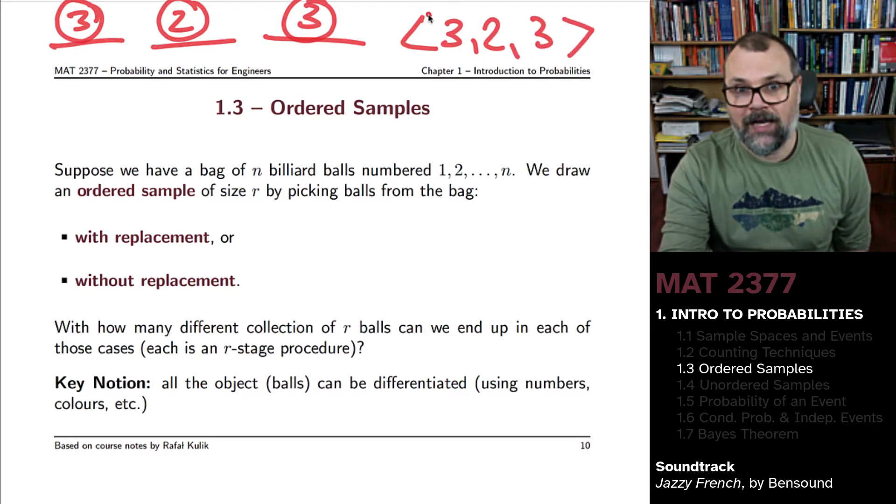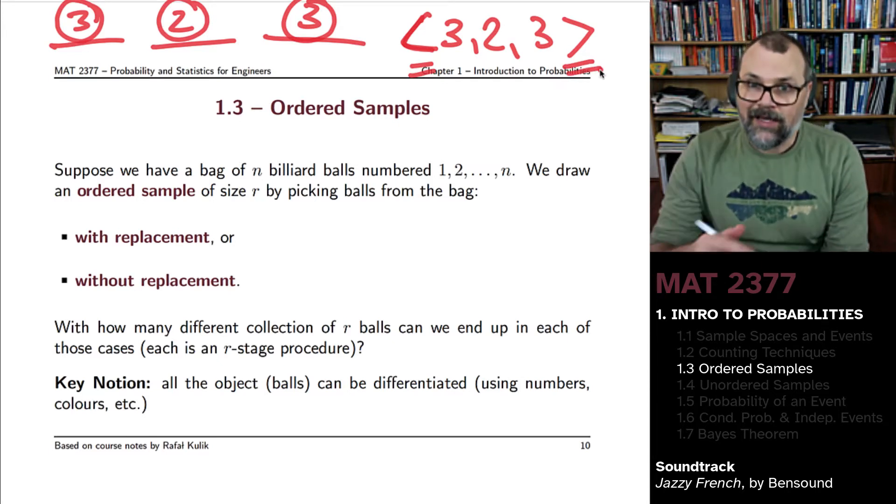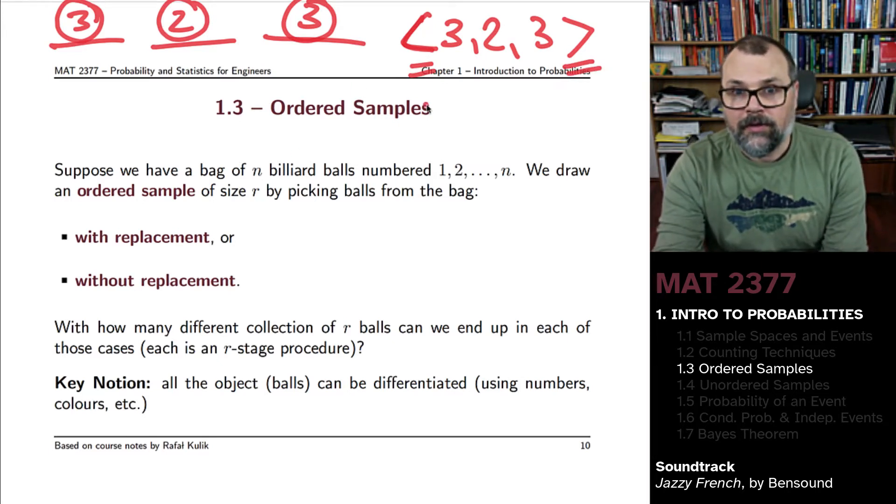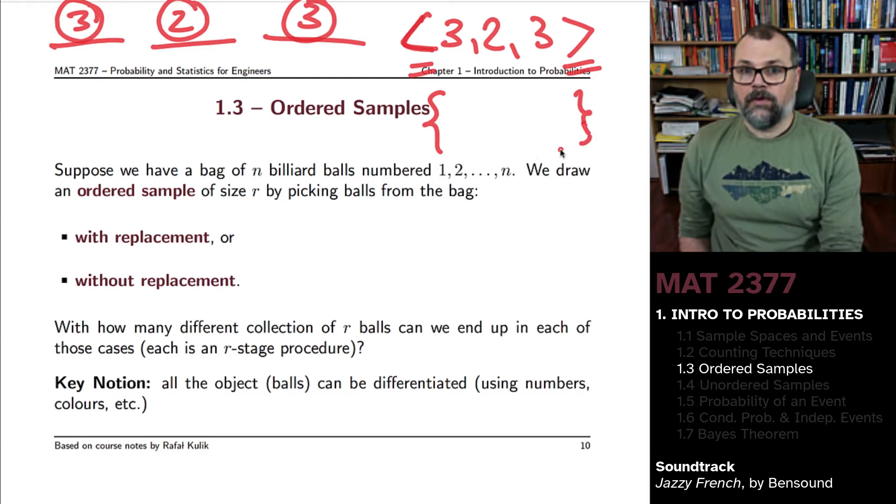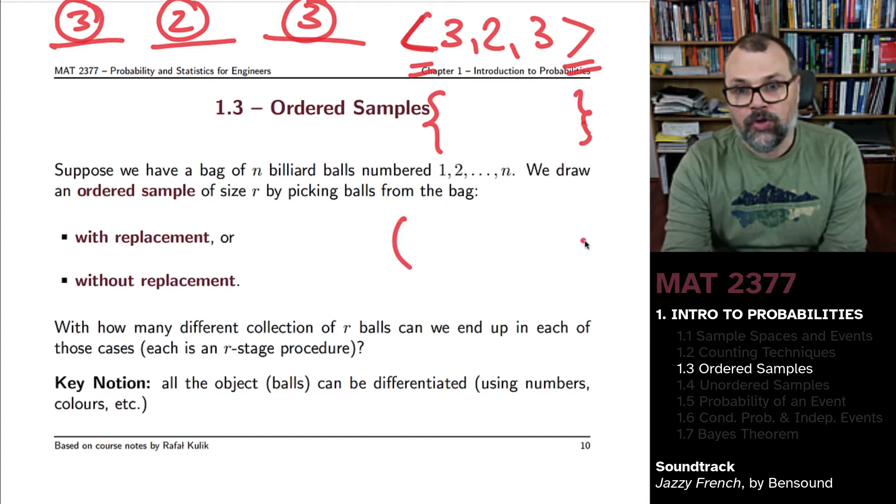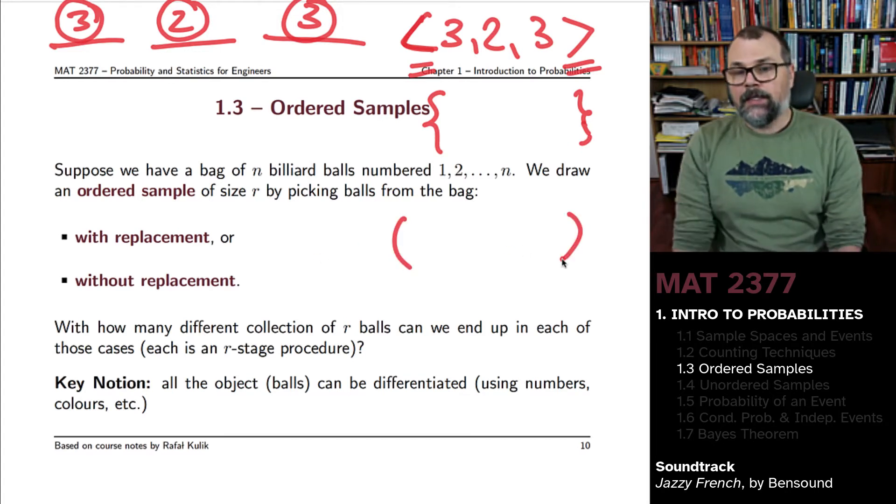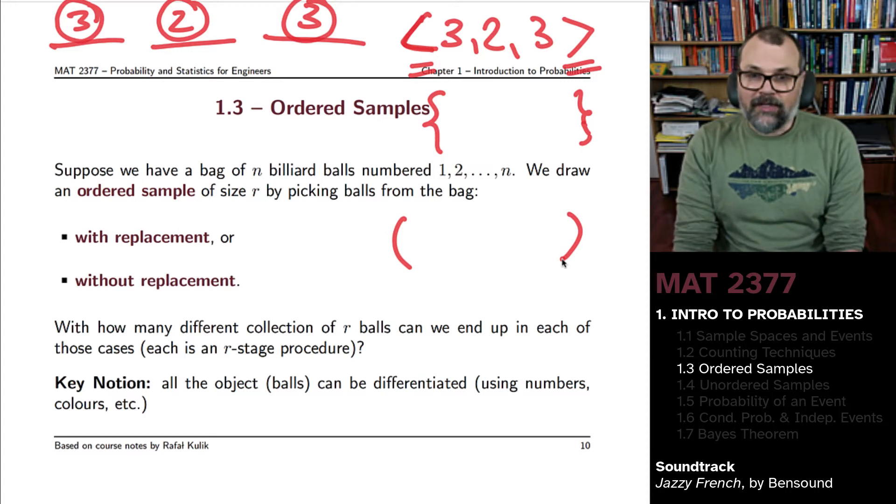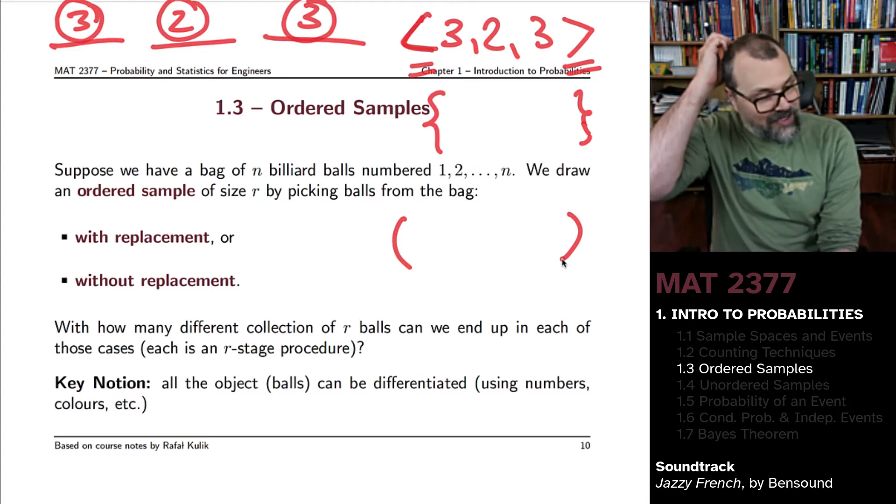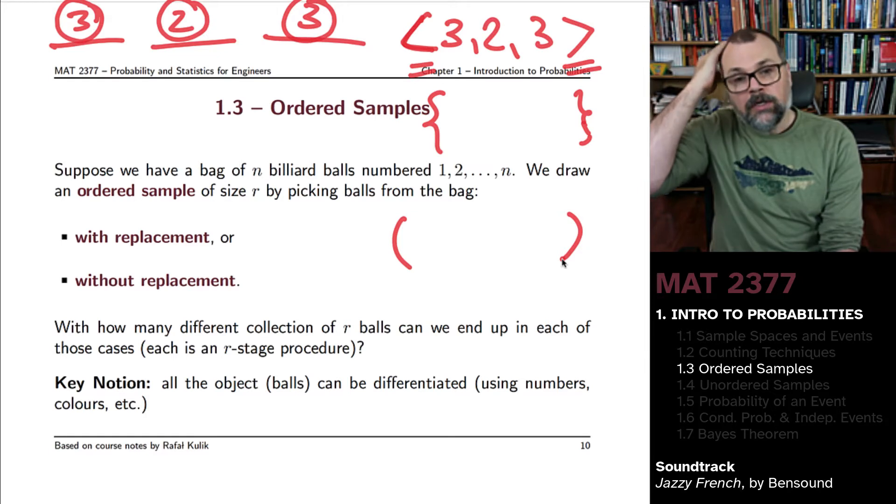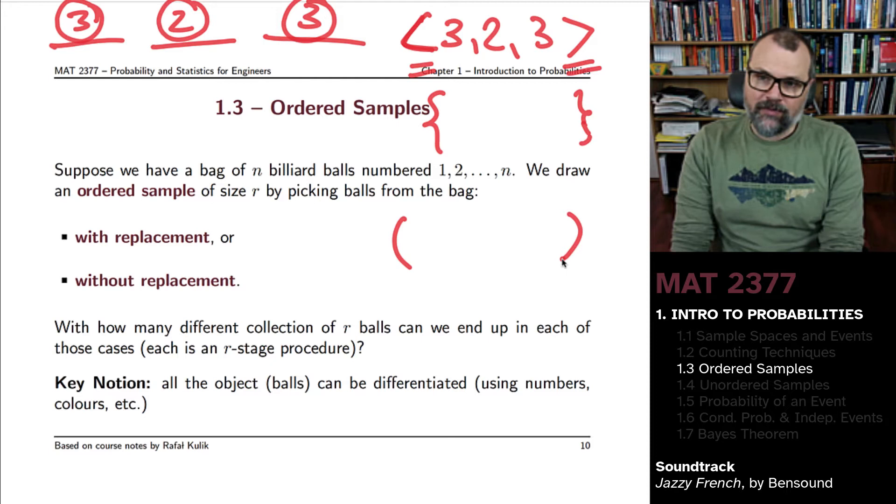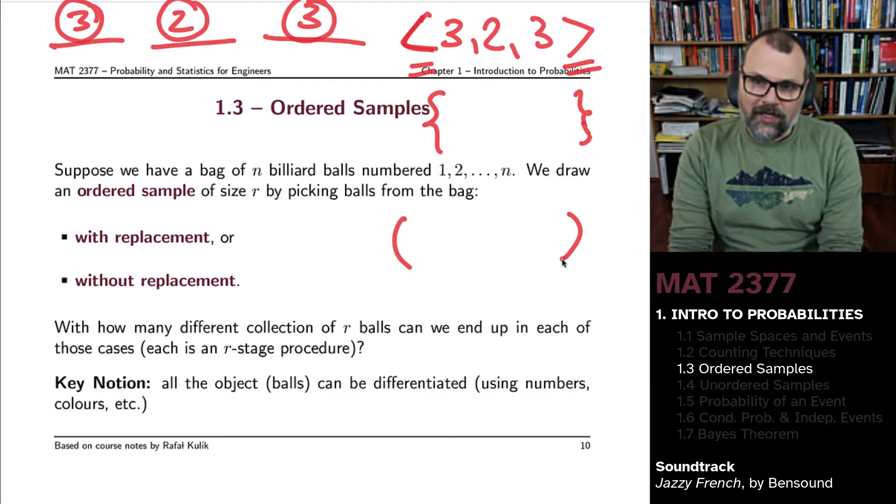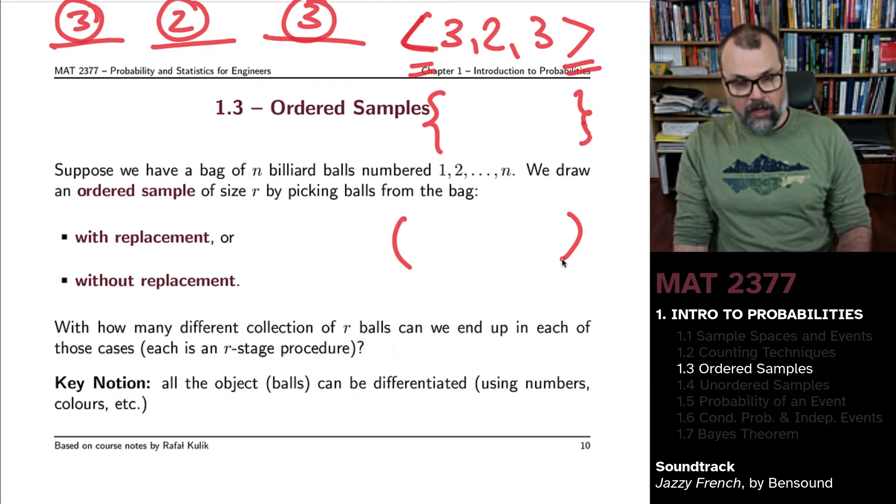And to highlight the fact that the order is important, we might use brackets here instead of curly brackets. You could conceivably also use round brackets. The curly brackets are saying that the order is not important. The round brackets or the pointy brackets tell me that the order in which these things are drawn is important.